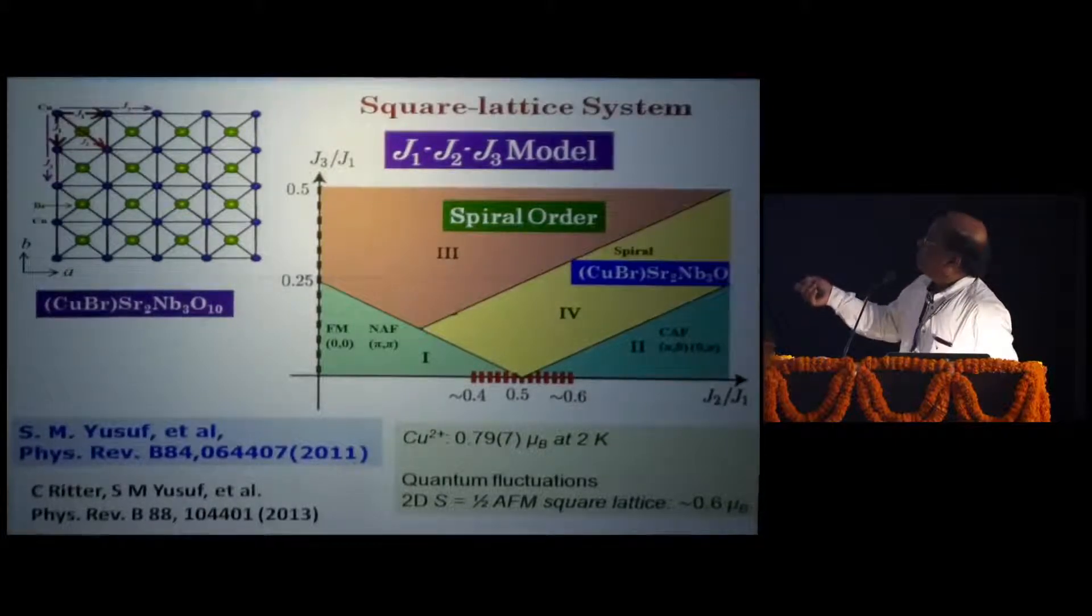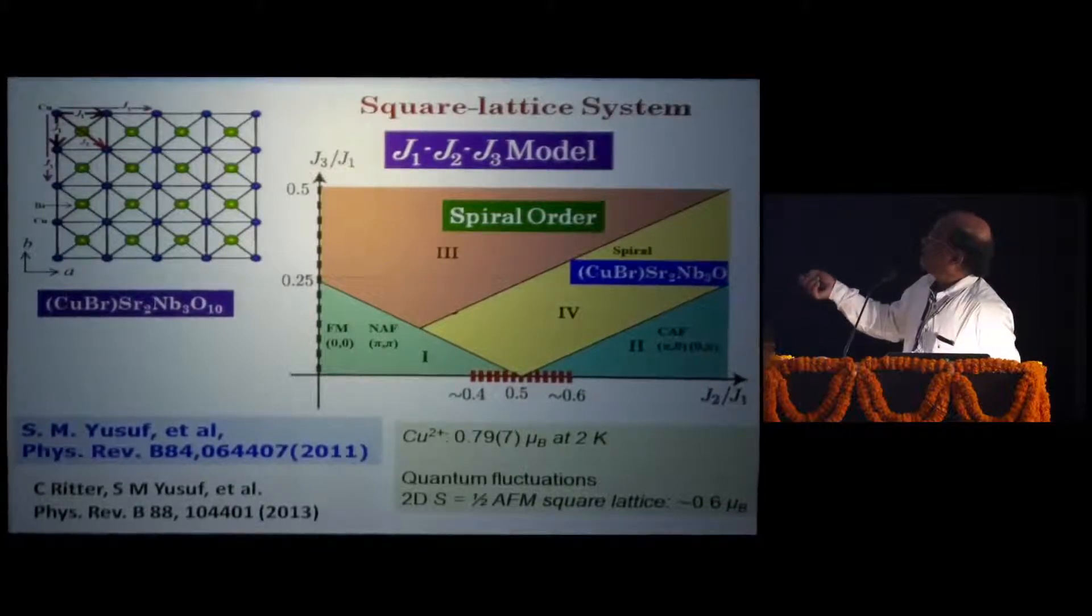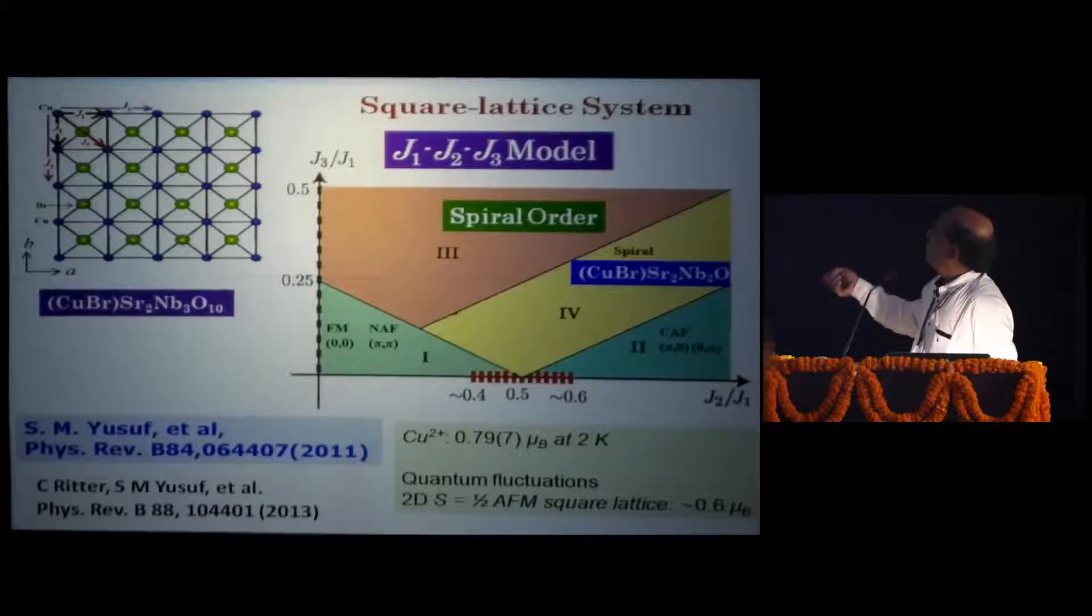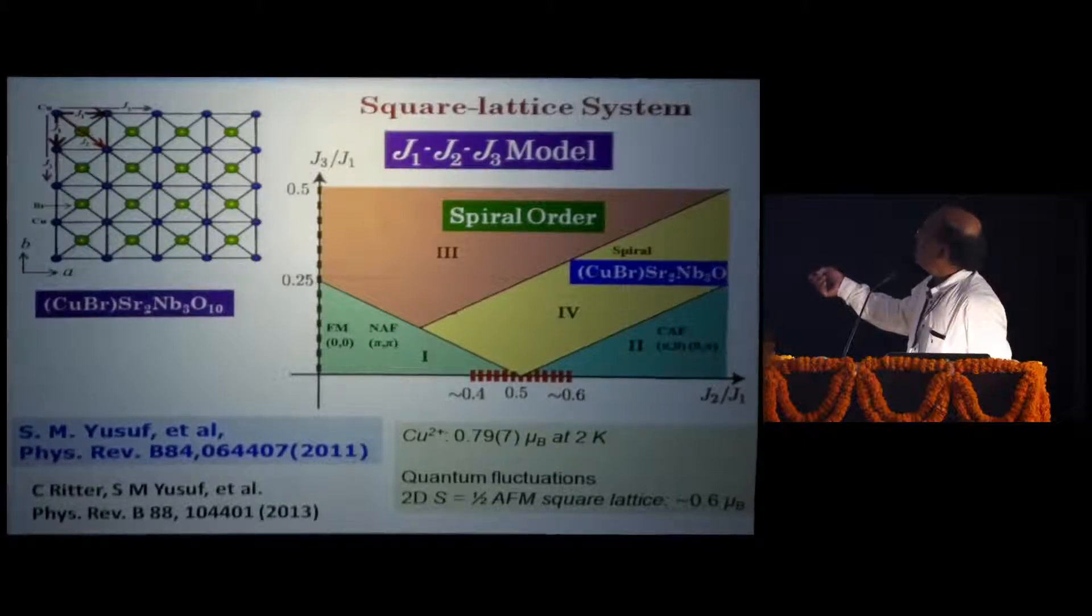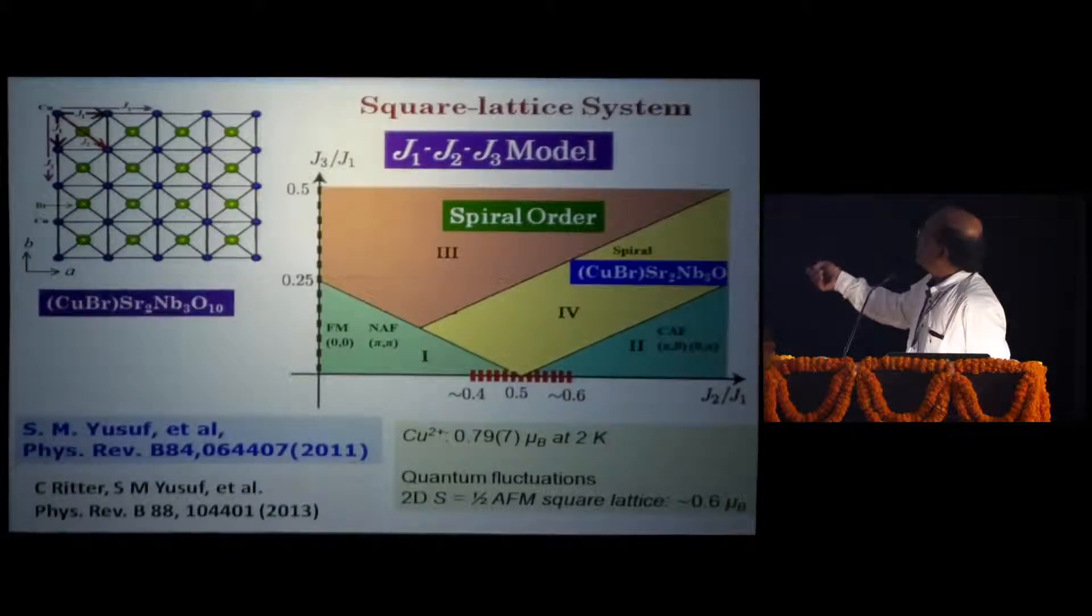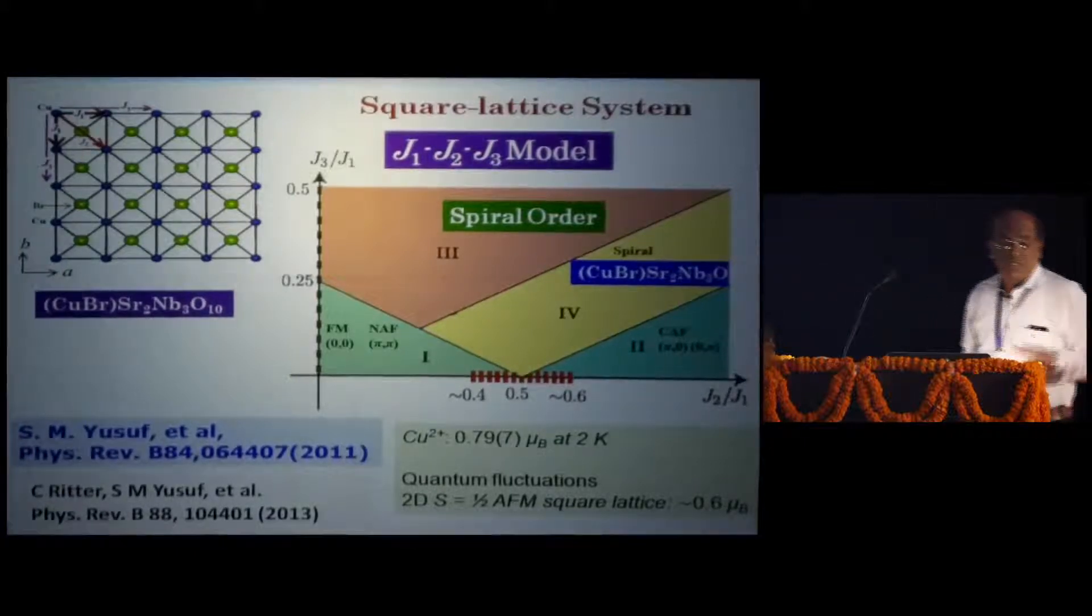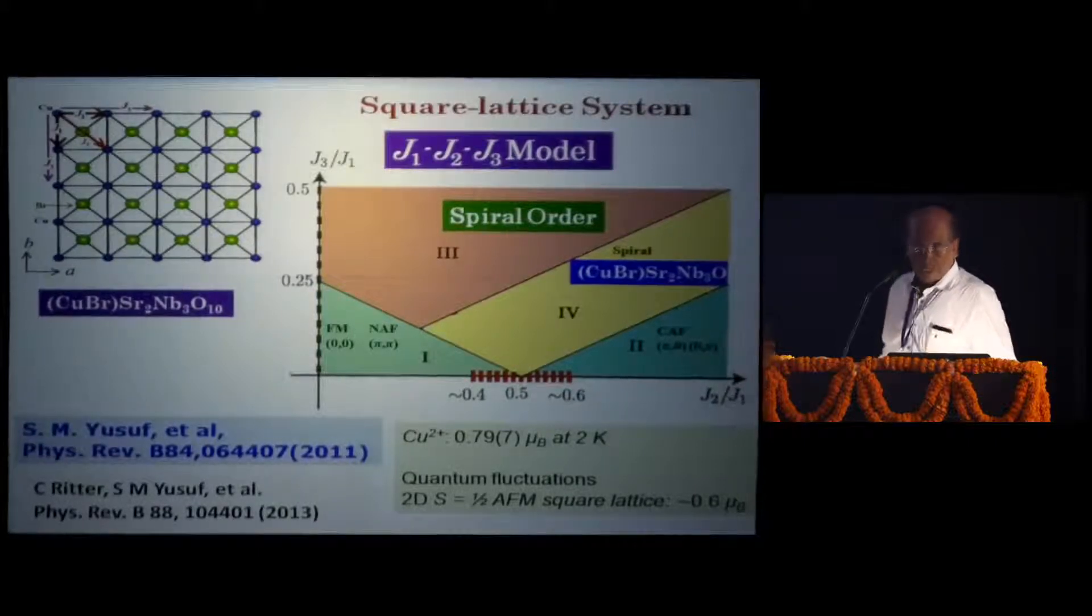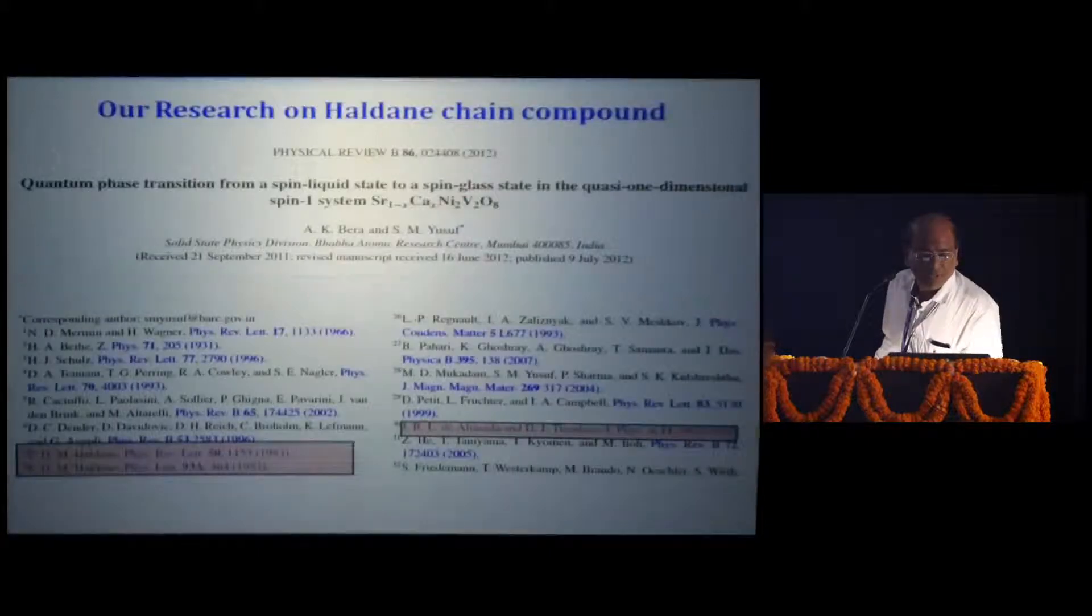Under this model, this ratio of J3, this is the J3 up to the next nearest neighbor, J3 by J1 and J2 by J1, over this strength of J2 by J1 and J3 by J1, we do have this spiral structure. Our system, this copper spin, it belongs to this spiral class, that means this kind of exchange interaction. We are carrying out inelastic, that is magnetic excitations, to measure all these J values, and that we will be able to present in near future.